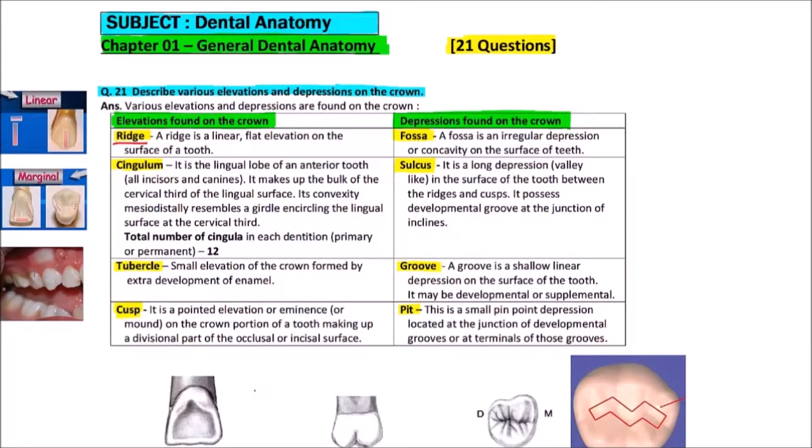First is ridge. A ridge is a linear flat elevation on the surface of the tooth. Here we can observe that this is a linear elevation. These are marginal ridges. This is incisal ridge. These are again the marginal ridges.